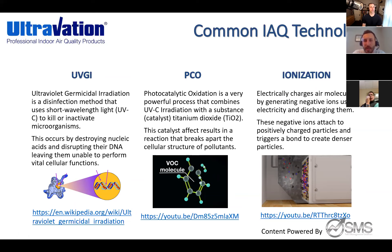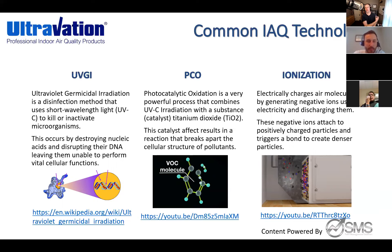Our common IAQ technologies are UVGI, PCO, and ionization. UVGI is ultraviolet germicidal irradiation — a disinfection method that uses short-wavelength light, UVC, to kill or inactivate microorganisms. This occurs by destroying nucleic acids and disrupting their DNA, leaving them unable to perform vital cellular functions. The key takeaway: UVGI is the method that uses UVC to kill or inactivate microorganisms, and you need UVC lamps to get UVGI technology.